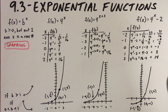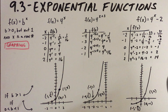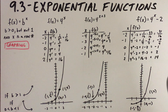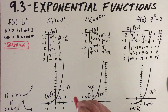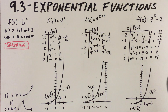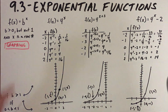Also, b has to be greater than zero but not equal to one. If b were one, then one to the first power is one, one to the second power is one, one to the third power is one, one to the negative fifth is one — so if we tried to graph this it would just be the point one, and we wouldn't get an exponential function. That's why the base cannot be one.